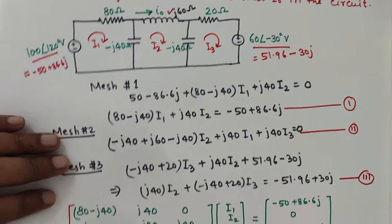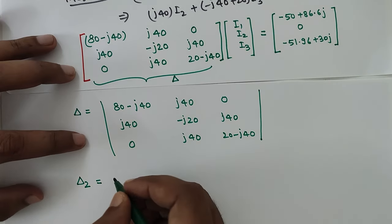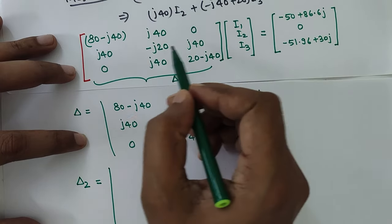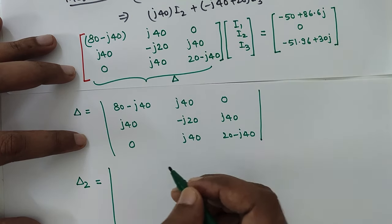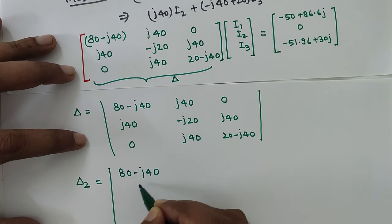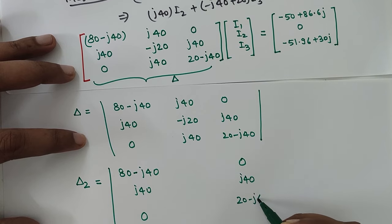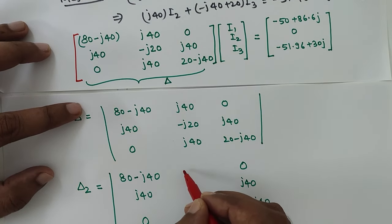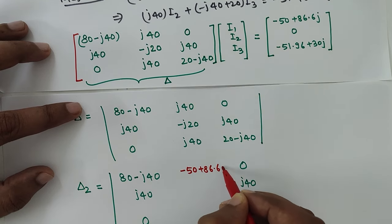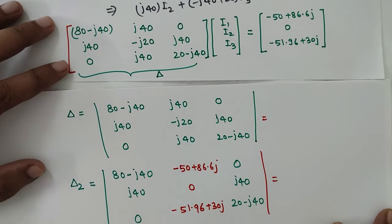For delta2, we replace the middle column with the constant terms. The first column remains: -j40, j40, 0. The last column remains: 0, j40, (20 - j40). The middle column becomes: (-50 + 86.6j), 0, and (-51.96 + 30j). We then calculate these two determinants to find the current.